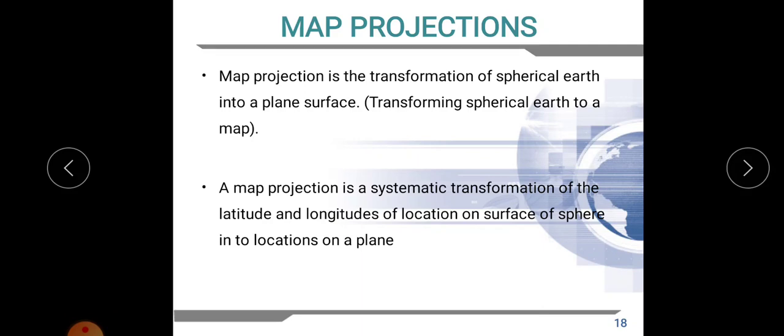Today we will discuss about map projections. Map projection means the transformation of spherical earth into a plane surface. That is, the process of transforming the spherical earth into a map is known as map projection — projecting the features on the three-dimensional globe into a two-dimensional map. A map projection is a systematic transformation of latitudes and longitudes of locations on the surface of a sphere into locations on a plane.